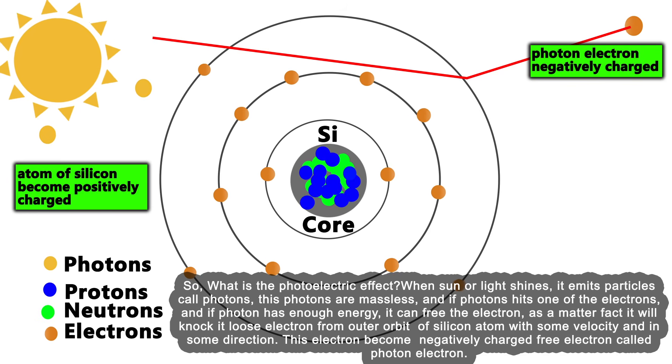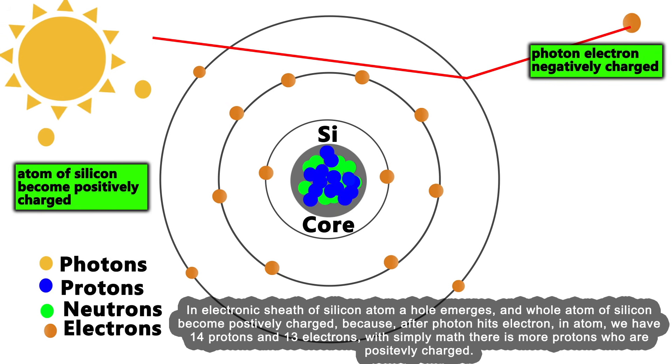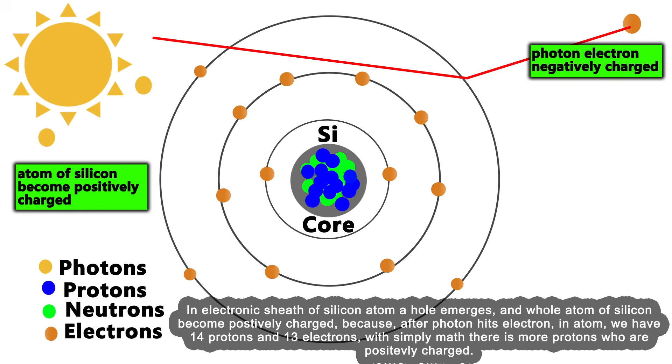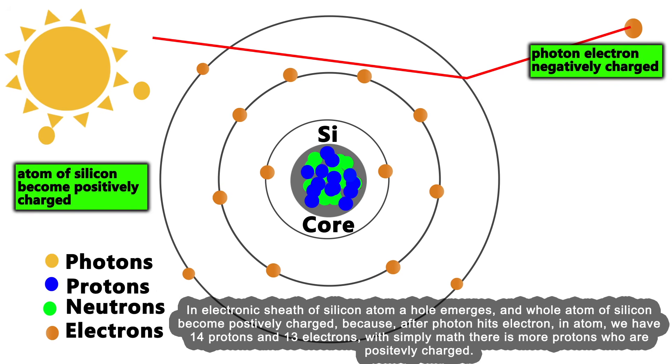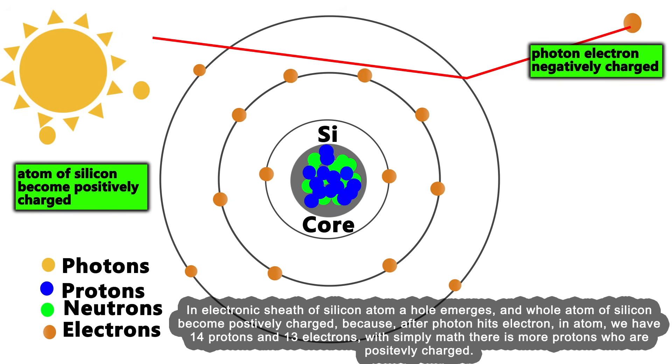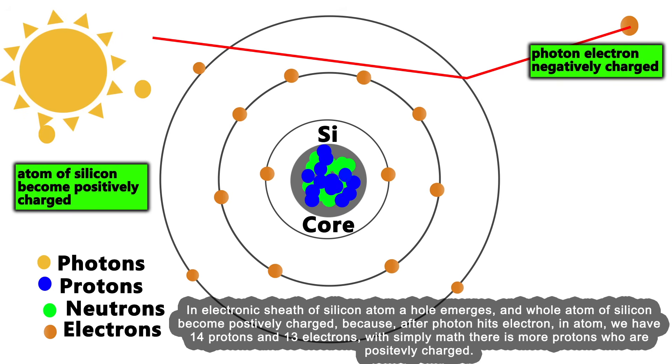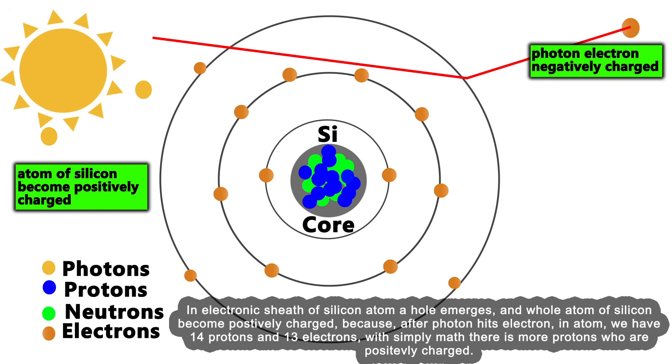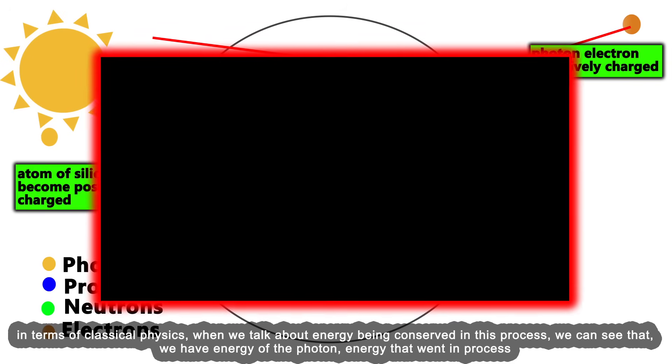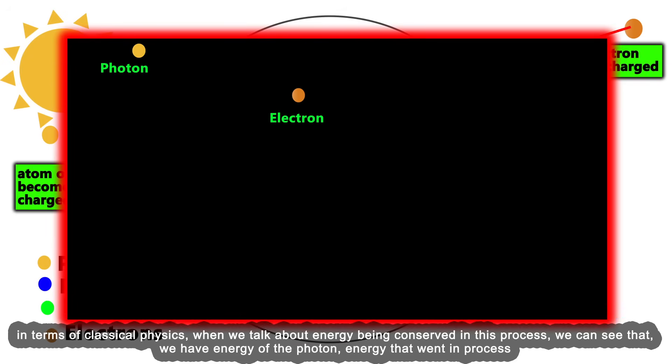In the electronic shell of the silicon atom, a hole emerges and the whole atom of silicon becomes positively charged, because after the photon hits the electron, we have 14 protons and 13 electrons. With simple math, there are more protons, which are positively charged.